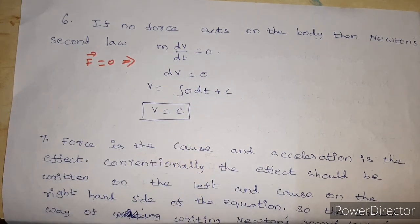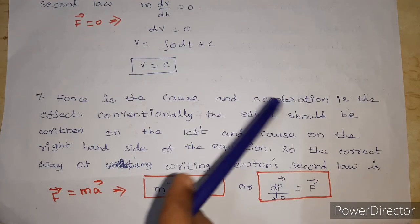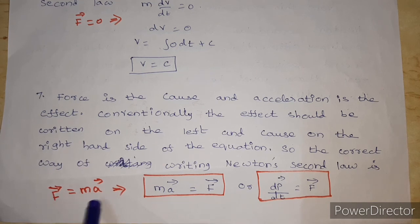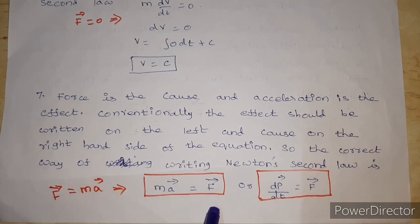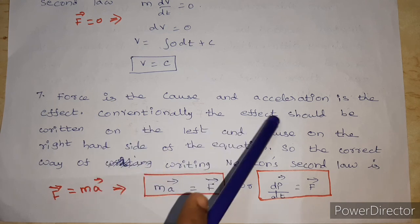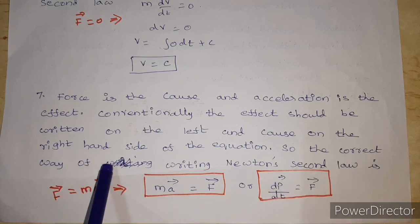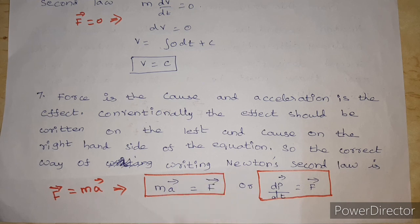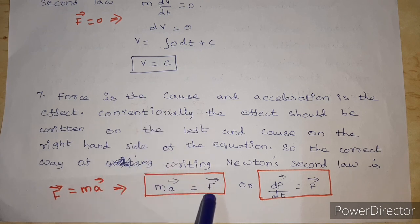Force is the cause and acceleration is the effect. In the equation, the force on the left hand side is the cause, and Ma vector is the effect. Conveniently, the effect should be written on the left and the cause on the right. So the correct way of writing Newton's second law is: Ma vector equal to F vector, with the effect on the left and the cause on the right.